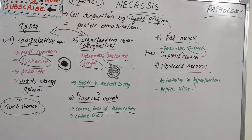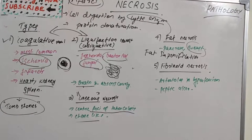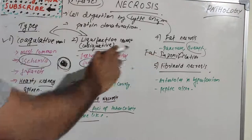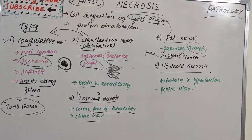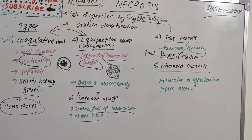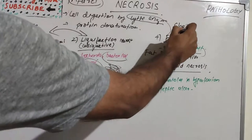The pancreatic enzymes liquefy the membrane of fat cells in the peritoneum, and the lipase enzymes split the triglyceride esters within the fat cells into fatty acids. These combine with calcium to produce grossly visible chalky white areas — fat saponification — commonly seen in pancreas and breasts. Fat necrosis appears as yellowish-white firm deposits, and the calcium soap imparts a firmer chalky white appearance to the necrotic foci.